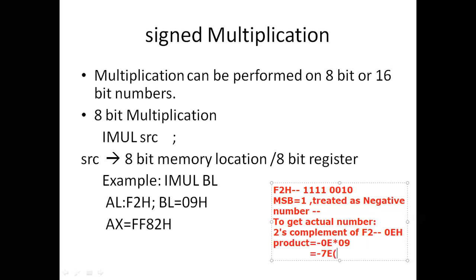The result -7Eh is a negative number. We need to find the two's complement of 7Eh to represent it in the register. The two's complement of 7Eh is FF82h — wait, it is FFA2h. So the result stored in AX is FFA2h, and its MSB is 1, confirming it is a negative number.